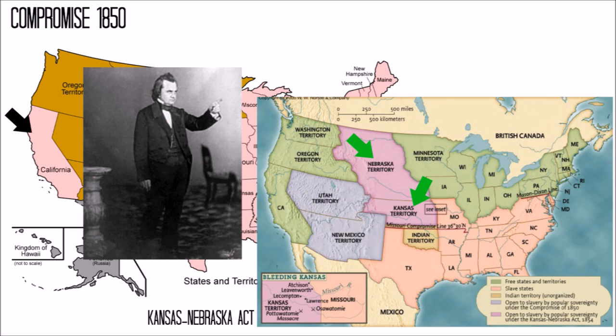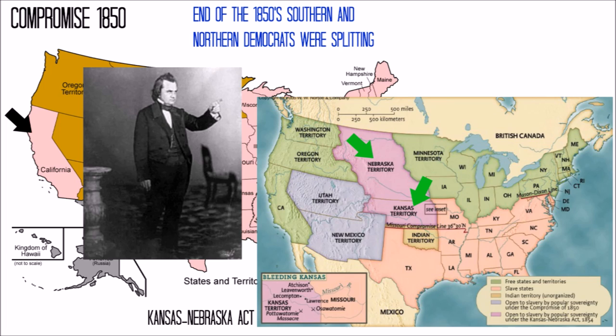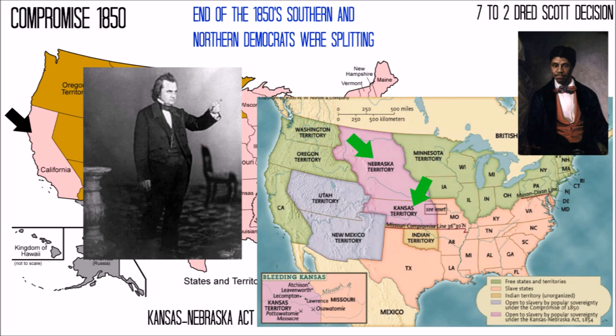Rather than admitting slave states and free states outright, Northern Democrats were desperately trying to hold the Union together by using the popular sovereignty principle to allow new states to vote on slavery. These kinds of compromises weren't enough for Southern Democrats, who rightfully saw the institution of slavery under attack. The final trigger was the 7-2 Dred Scott decision of the US Supreme Court, which denied former slave Dred Scott his freedom, contending in the majority opinion that neither Scott nor any person of African descent had any right to petition the federal government for their freedom, as they were not citizens of the United States.